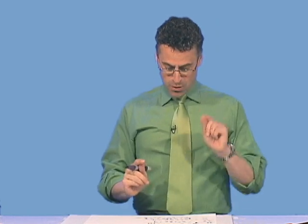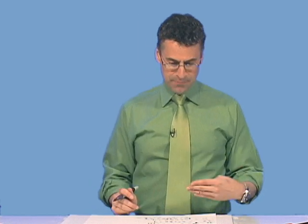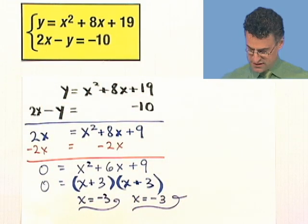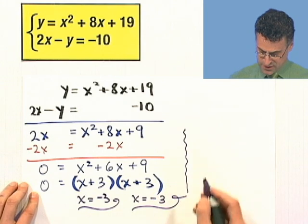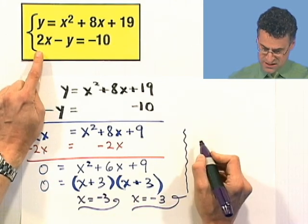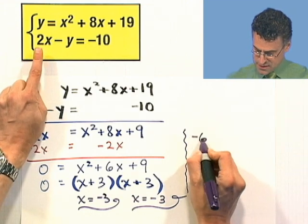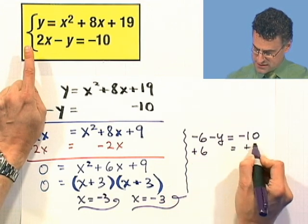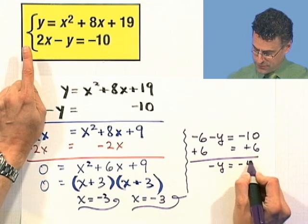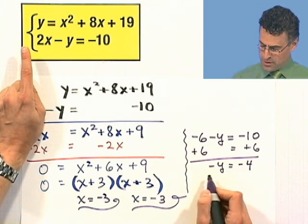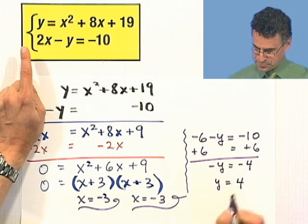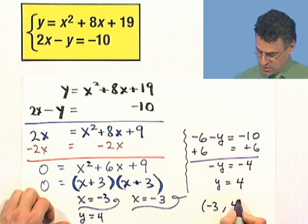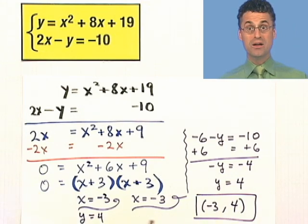So the question now is, where is the y value for that x solution? What you can do is go back to either equation and solve for y. Let's just look at the linear one. So I'm going to let x equal negative 3. 2 times negative 3 is negative 6, minus y equals negative 10. If I add 6 to both sides, then I see that negative y is equal to negative 4. If I divide both sides by negative 1, I see y equals 4. So the answer is negative 3, 4. There's only one solution because they just touch at one point.